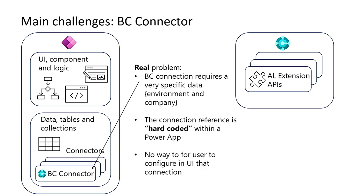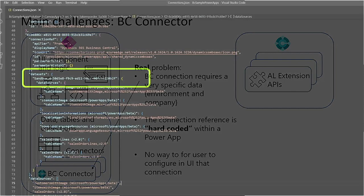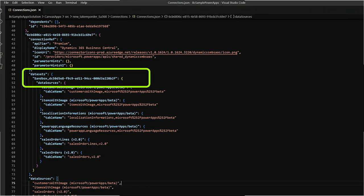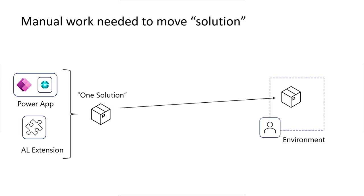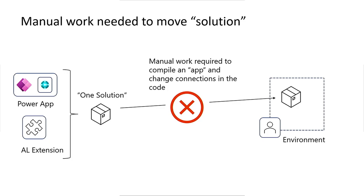That's not specific to Business Central as a connector — that's just how Power Apps work today. Some connections are hardcoded to a given environment. So if you build an app for a given environment, somewhere in the app code there's a hardcoded reference that's really tricky to find and change. If you build an app together with an extension, get one solution, and want to publish it to another environment, it's not going to work — the reference is invalid and nothing works. You need to do manual work, and that's not helpful.